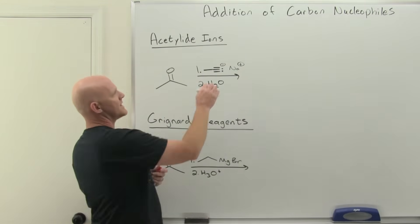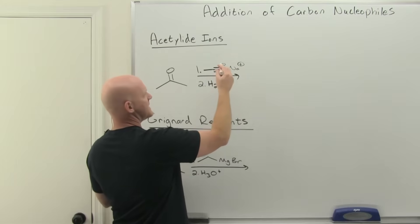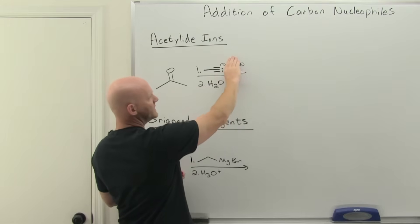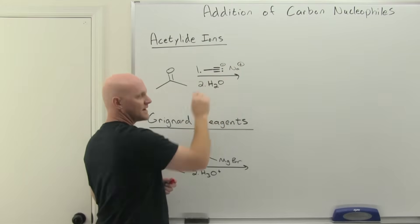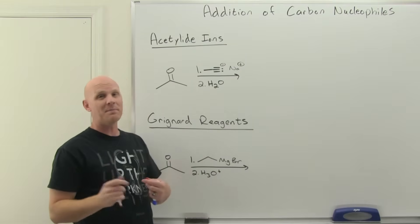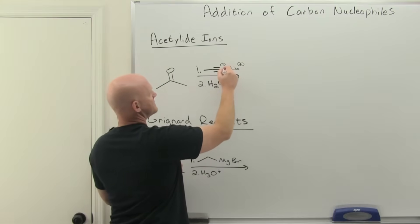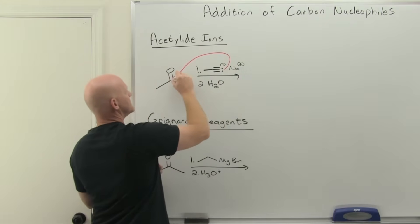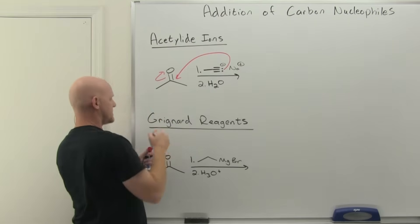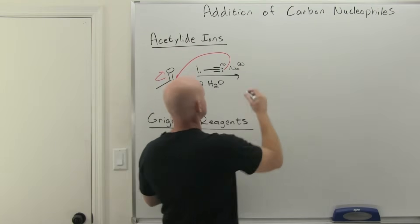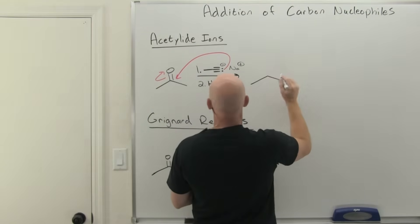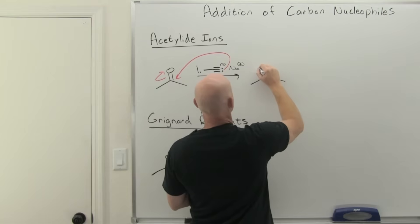In this case, we're going to add that acetylide ion, the sodium here is just a spectator. Sometimes you'll see it not even drawn in, but it's typically there. Had to form the acetylide usually by deprotonating a terminal alkyne with sodium amide, so that's where the sodium ion comes from. This carbon nucleophile is just going to do nucleophilic attack, push the electrons up to the oxygen, and we'll once again form an alkoxide here.